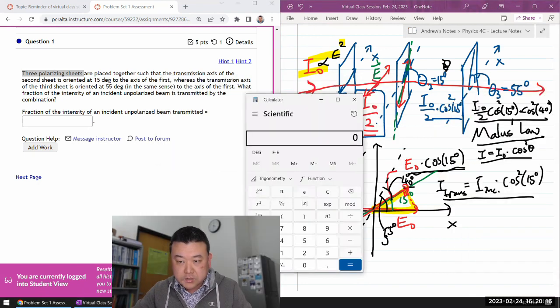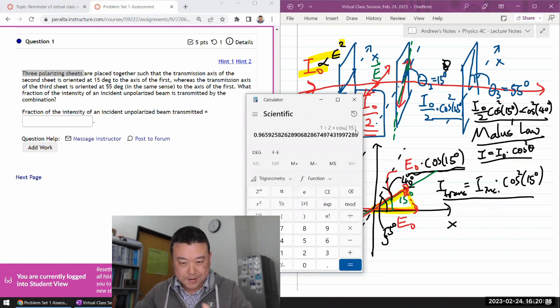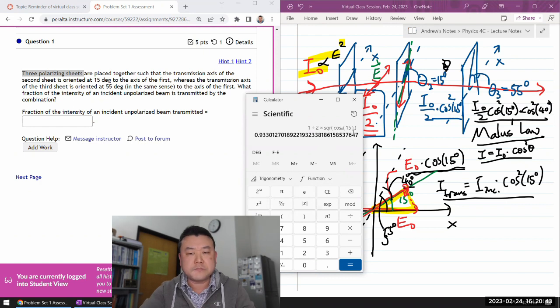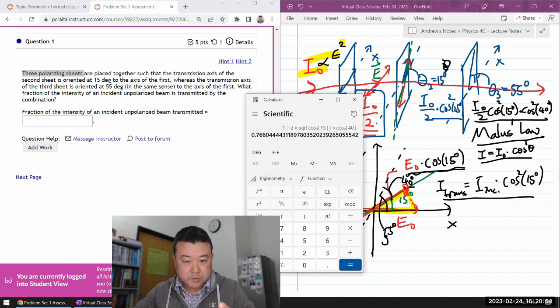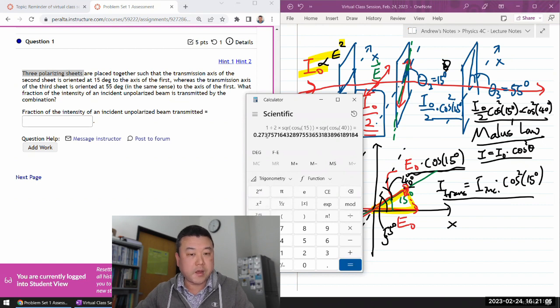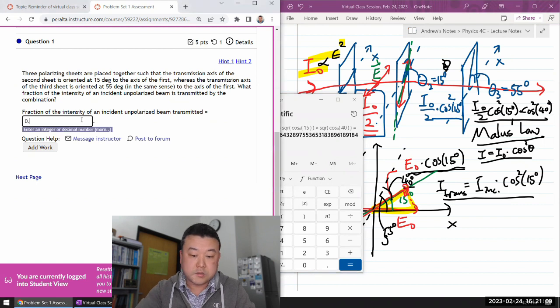I'm going to plug in the numbers. I can skip the initial intensity since it's asking for fraction. So one half accounts for the first polarizing sheet, times cosine of 15 degrees squared for the second polarizer, and the third polarizer would be cosine of 40 degrees squared. So 0.274 is the fraction of the incident intensity.